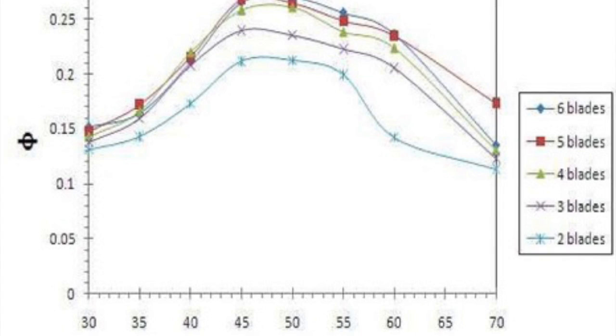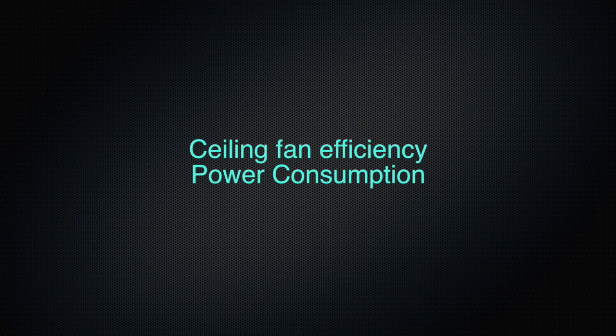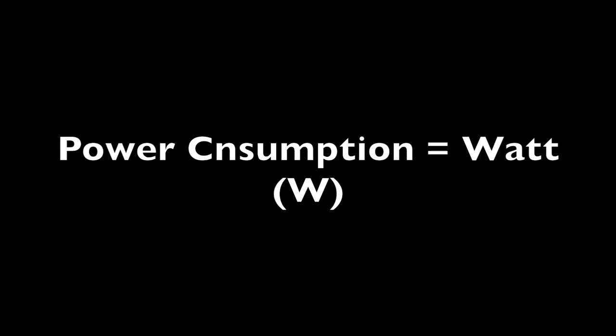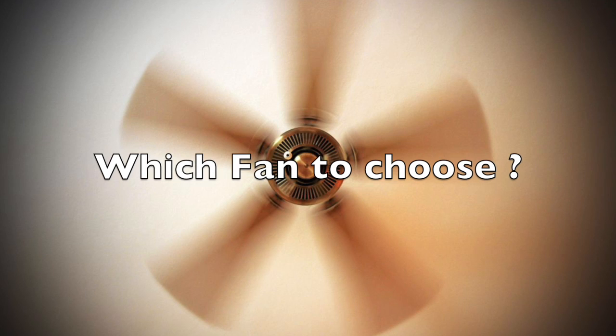How is ceiling fan efficiency and power consumption measured? The two most important values are the amount of air movement generated, represented by the unit cubic feet per minute or CFM, and the power consumption in watts. On average, a ceiling fan has an airflow generation of about 5,500 CFM and consumes about 70 watts. Dividing the airflow generation by the power consumption gives the ceiling fan efficiency — in this case approximately 5,500 CFM divided by 70 watts, or about 79 CFM per watt.